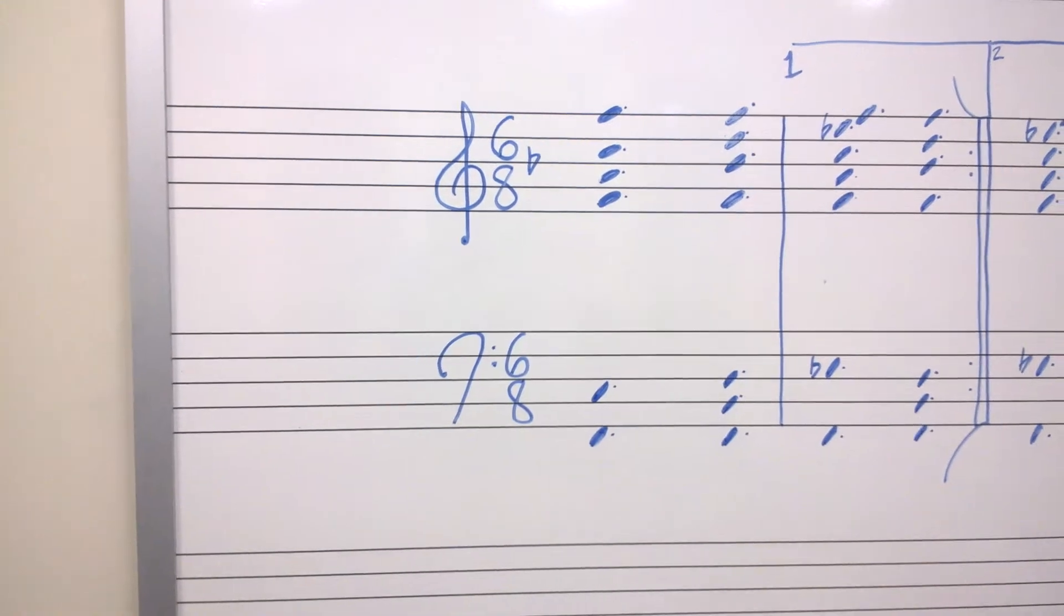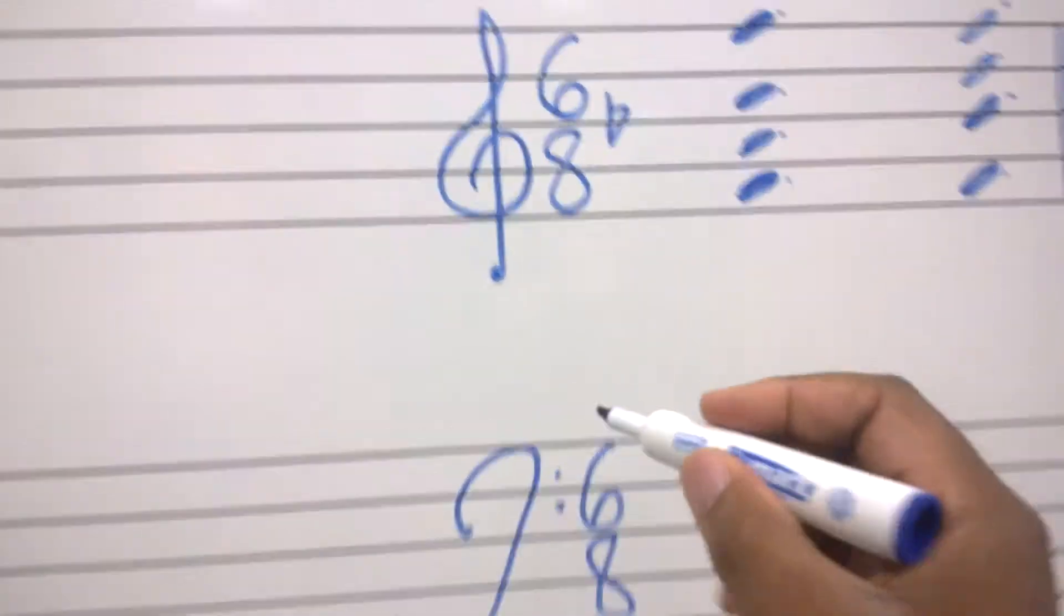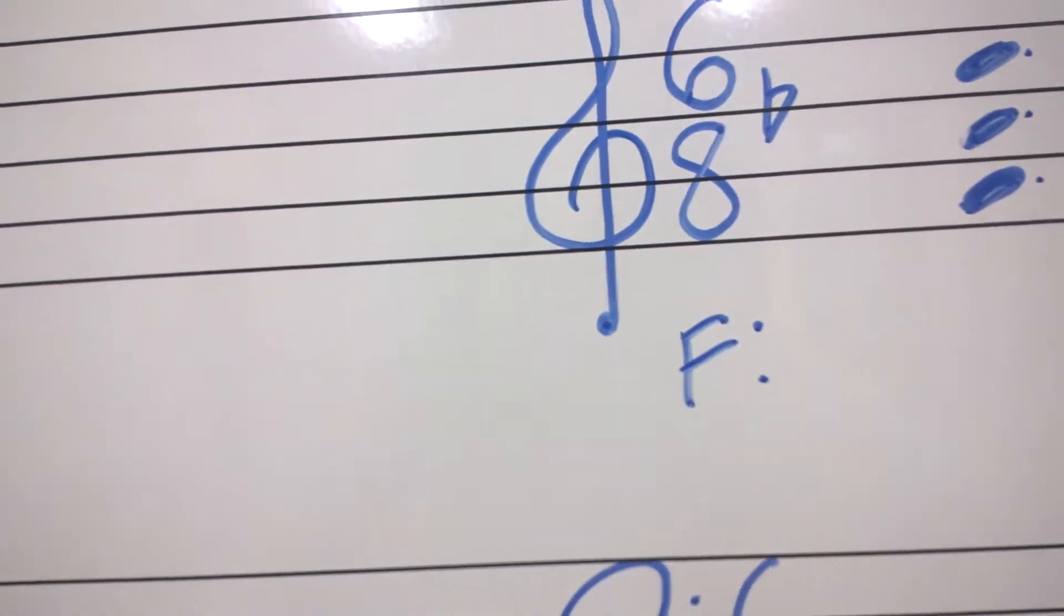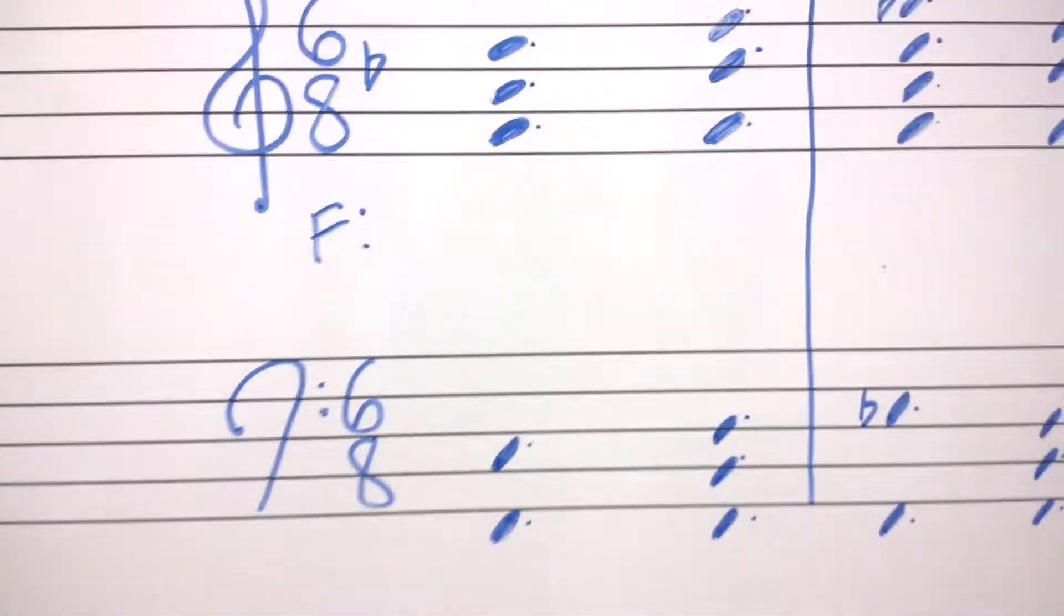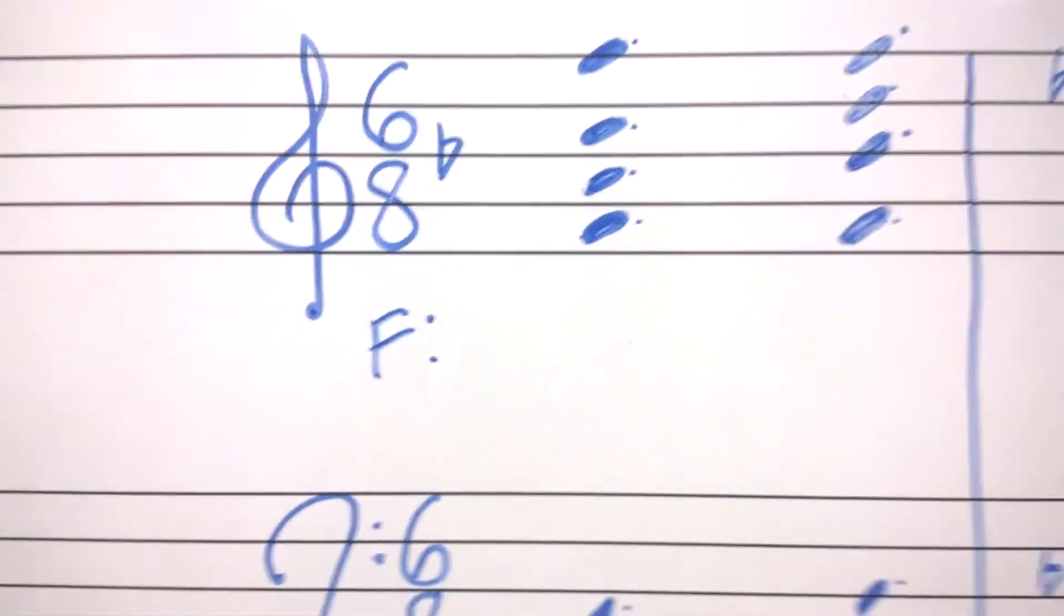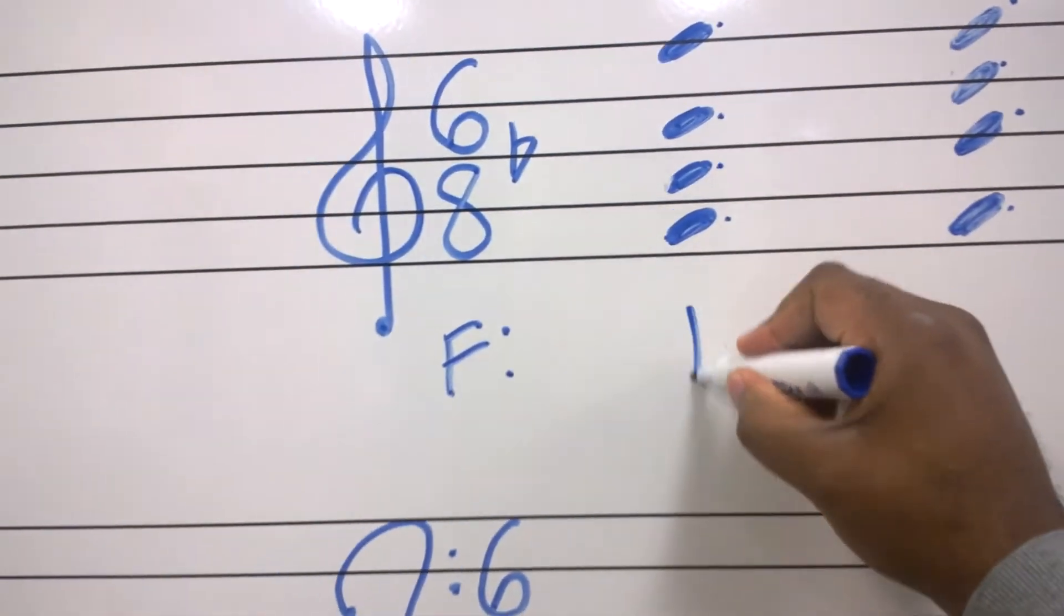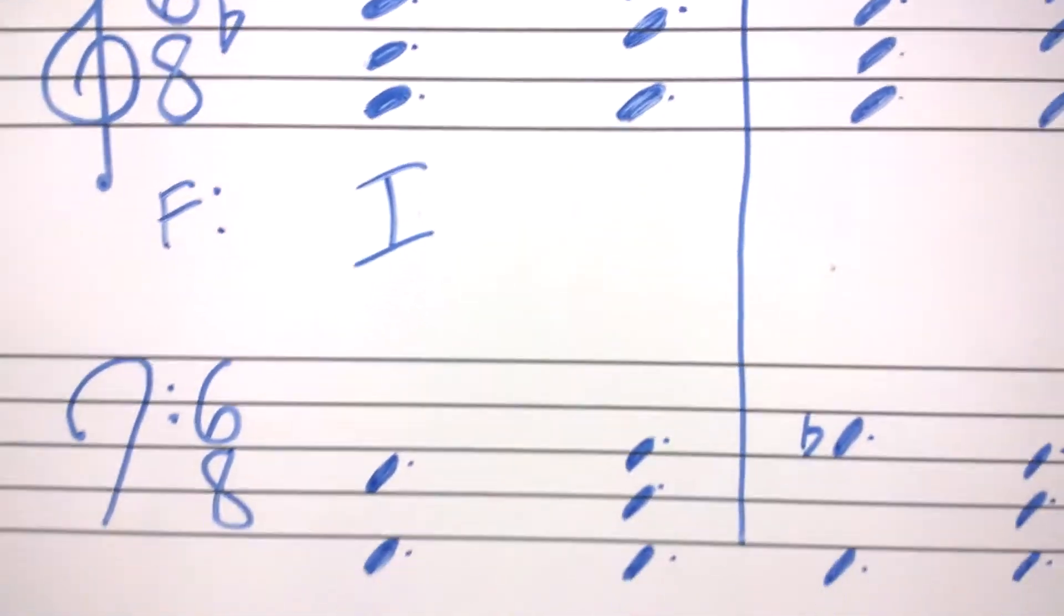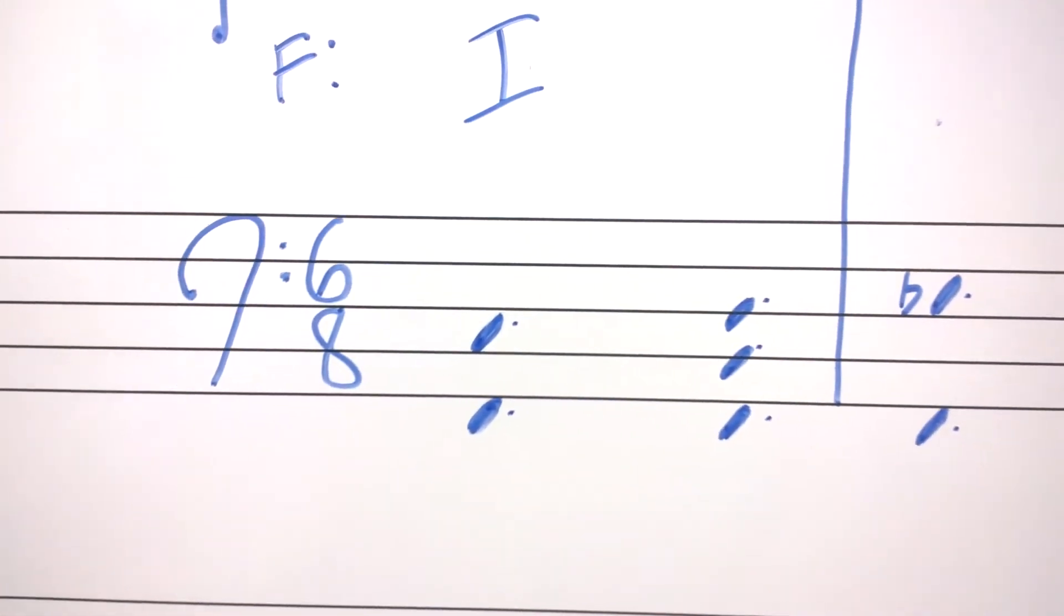But enough of that, let's get into the theory. First, we're starting in the key of F, one flat in the key signature. Now, the voicing here, you have F, A, and C. That shows you that that is the tonic chord. Not too bad. Playing a root and a fifth in the bass.